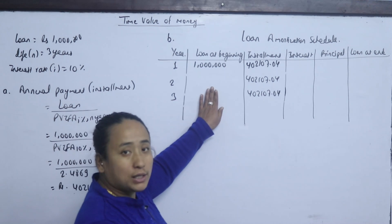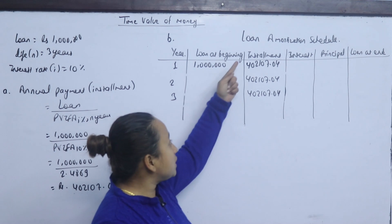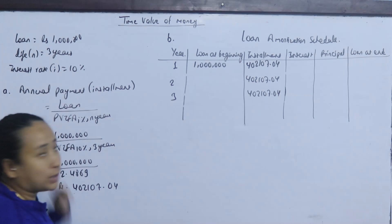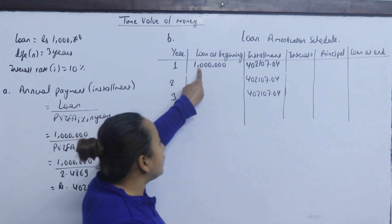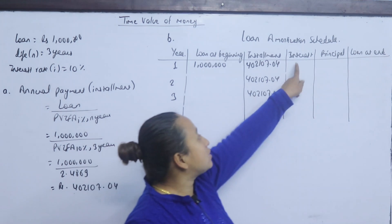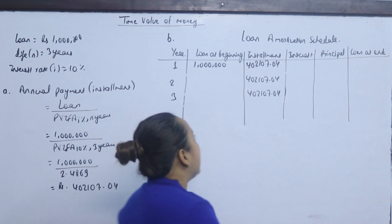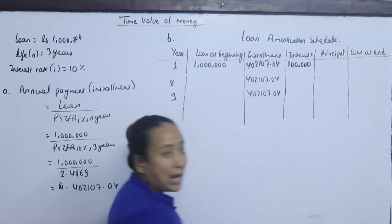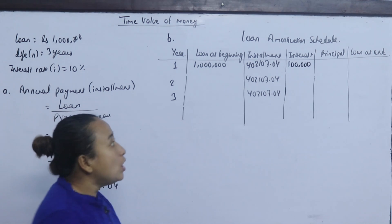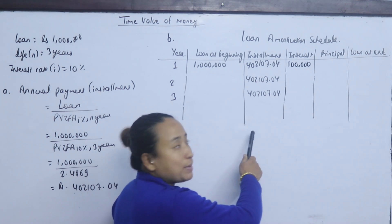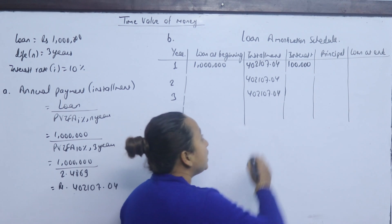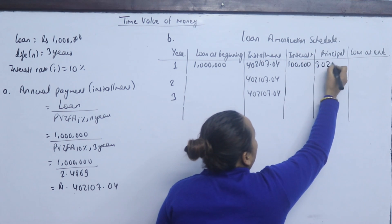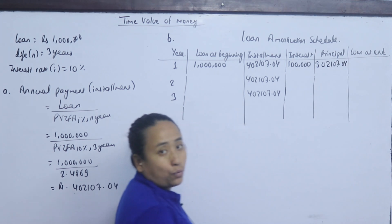The rule is that the loan at the beginning of year 1 is 1 million. The interest rate is 10%, so the interest for year 1 is 100,000. The principal portion of the installment is the installment minus the interest: 402,107.04 minus 100,000 equals 302,107.04.